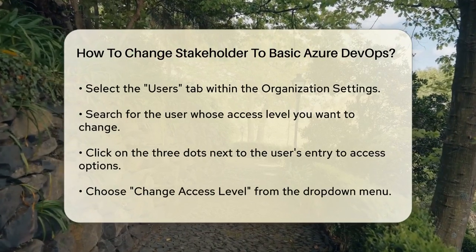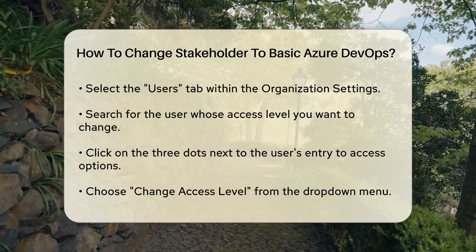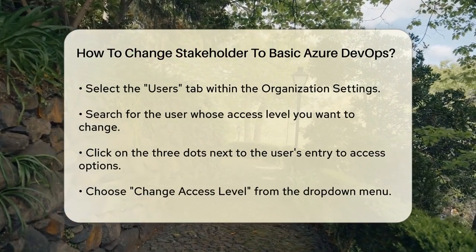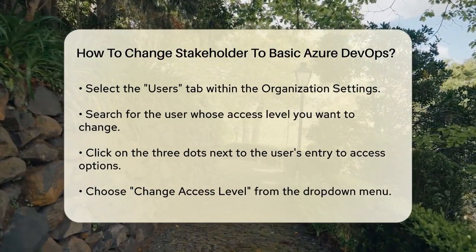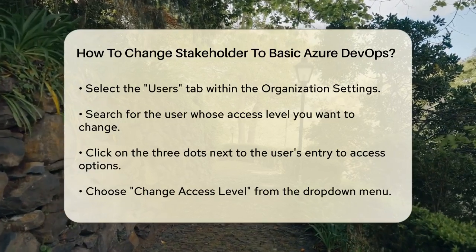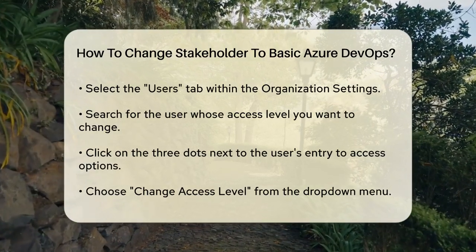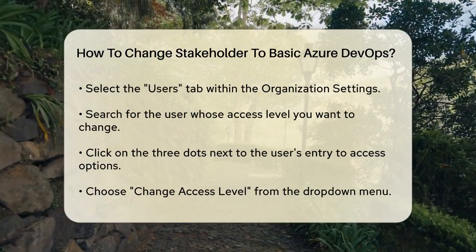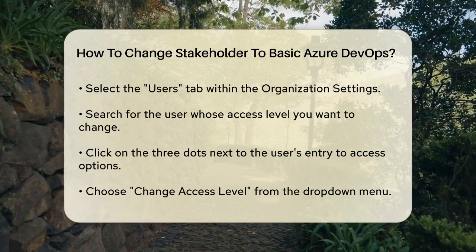Here, you'll need to search for the user whose access level you want to change. After finding the user, look to the extreme right of their entry and click on the three dots. From the drop-down menu, select Change Access Level.